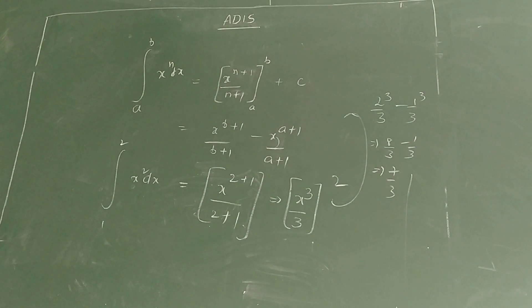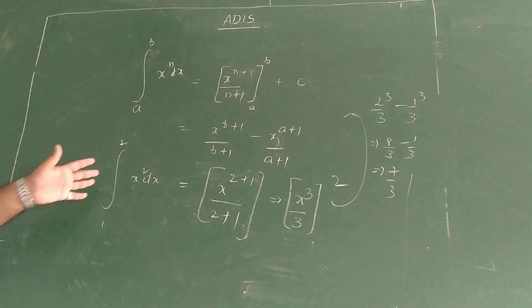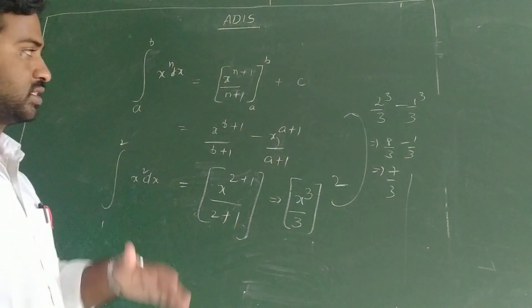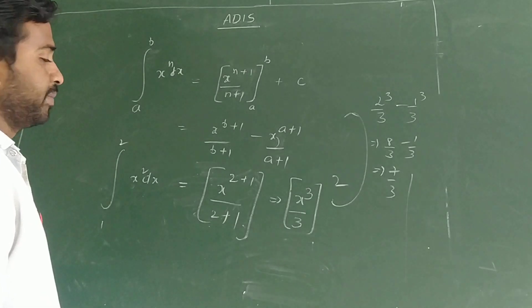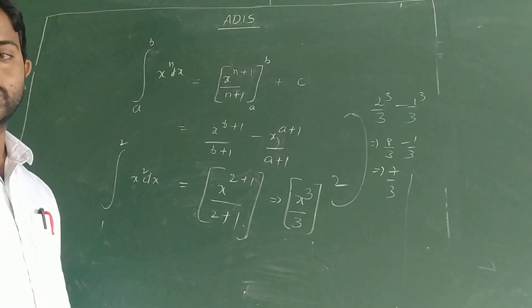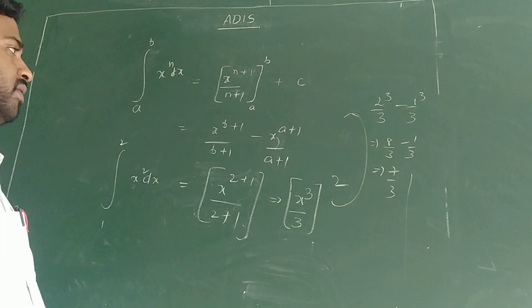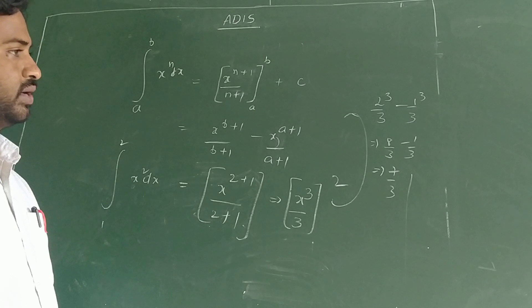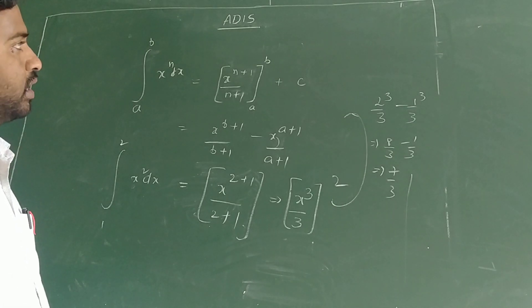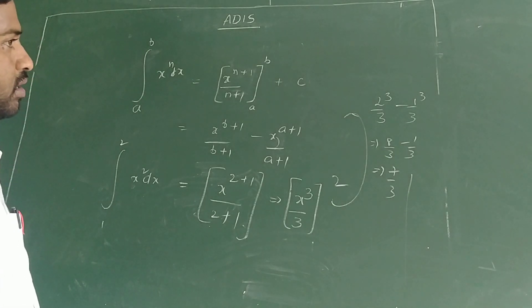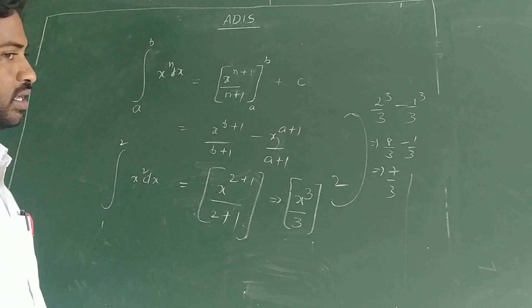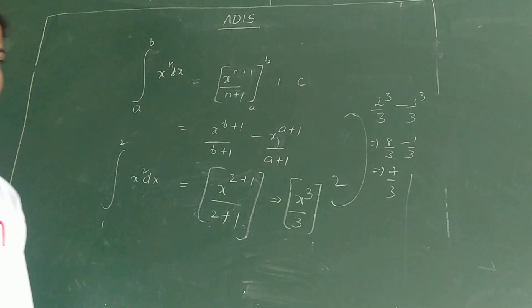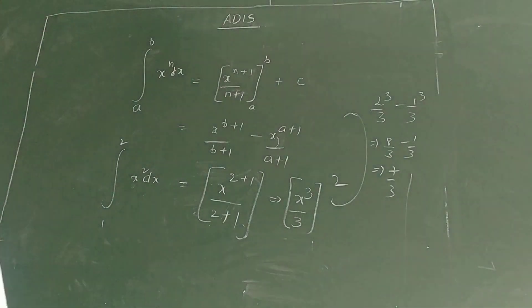This is the way to calculate using integration formulas. The main formula we use in physics is ∫ xⁿ dx = xⁿ⁺¹/(n+1). In the next class, I will discuss the equations of motion using the calculus/integration method. Thank you, dear students.